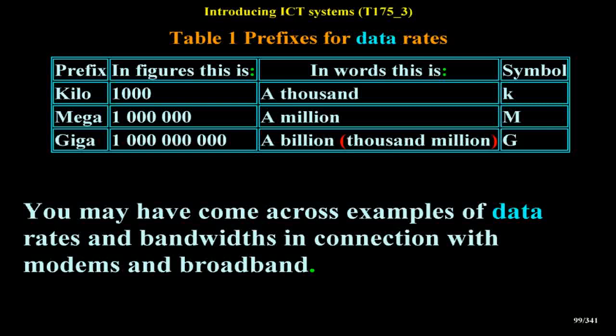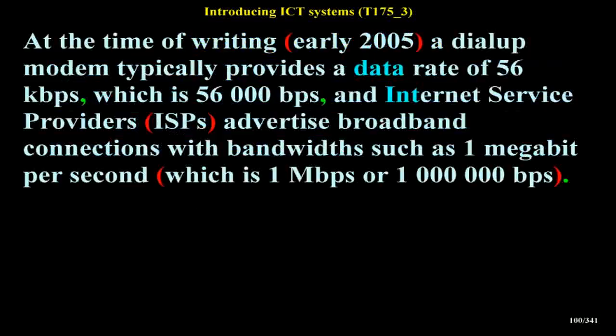You may have come across examples of data rates and bandwidths in connection with modems and broadband. At the time of writing (early 2005), a dial-up modem typically provides a data rate of 56 kbps, which is 56,000 bps, and internet service providers (ISPs) advertise broadband connections with bandwidths such as 1 megabit per second (1 Mbps), or 1,000,000 bps.